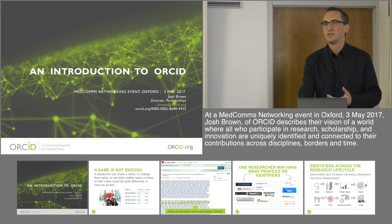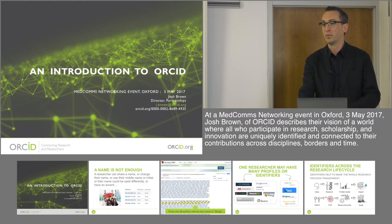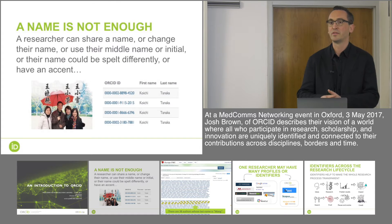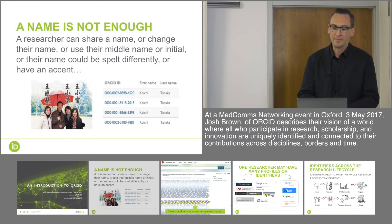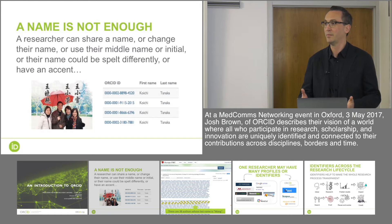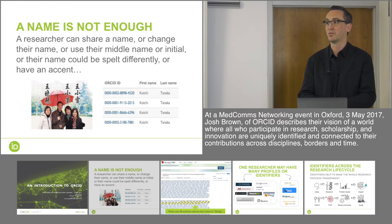ORCID exists to solve an ongoing problem, an old problem in scholarly communications, and that is that authors identify themselves using their names when they publish. It's completely natural, but a name is not enough. My name is Josh Brown, I'm Joshua Brown. If you look on my passport, I'm Joshua Alexander Brown.